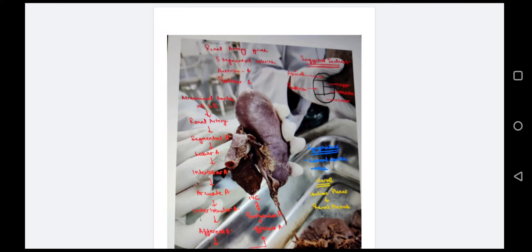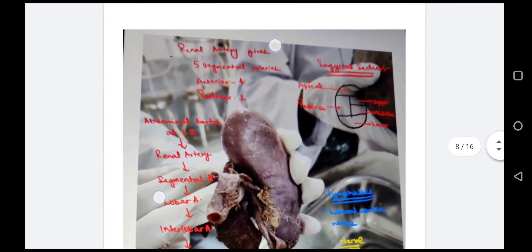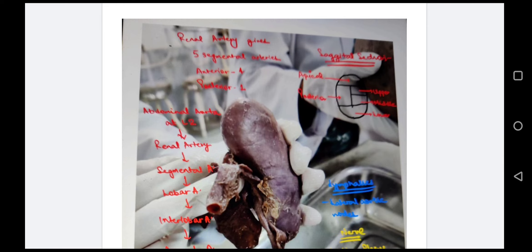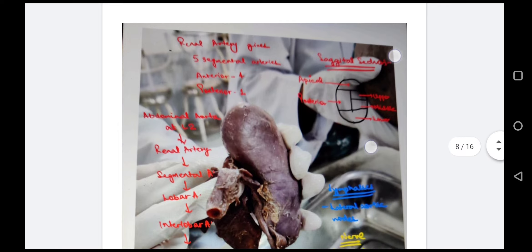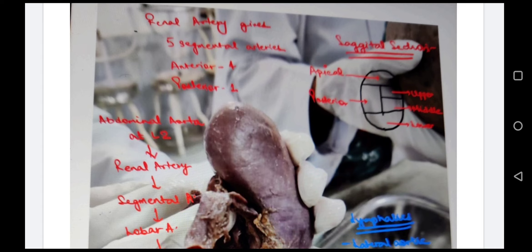The blood supply of the kidney comes from the renal arteries, which give five segmental arteries — four anterior branches and one posterior branch. Depending on which region each segmental artery supplies, the kidney is divided into five parts. In a sagittal section we see: apical (upper), lower, posterior, and the anterior is divided into upper and middle parts.